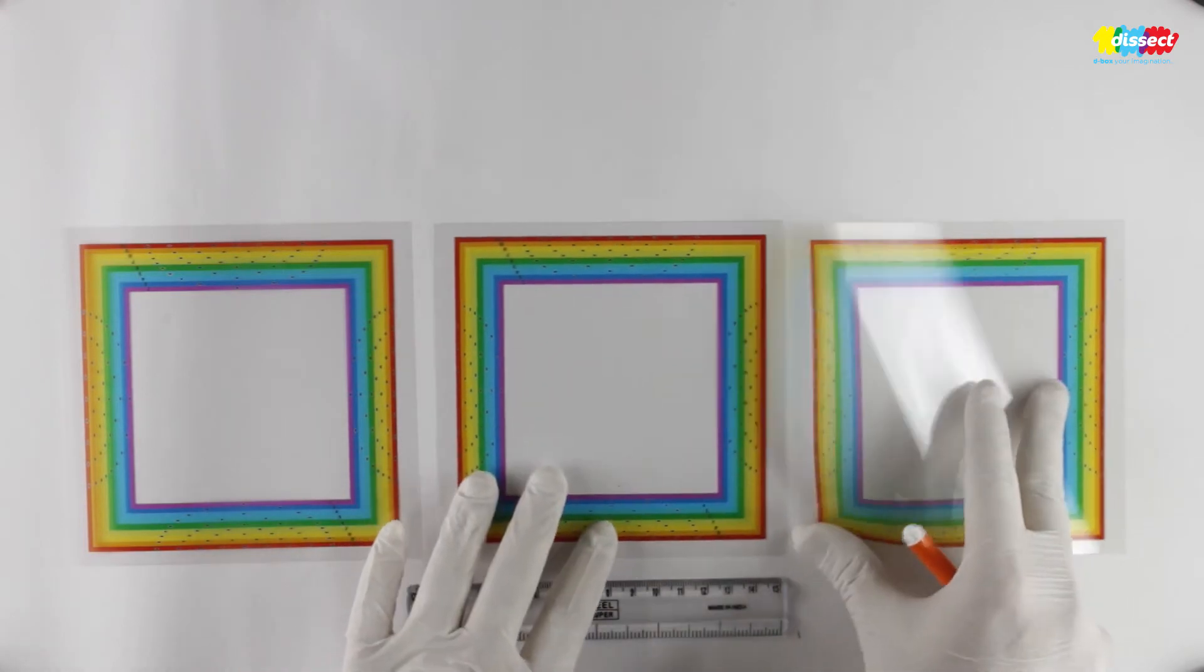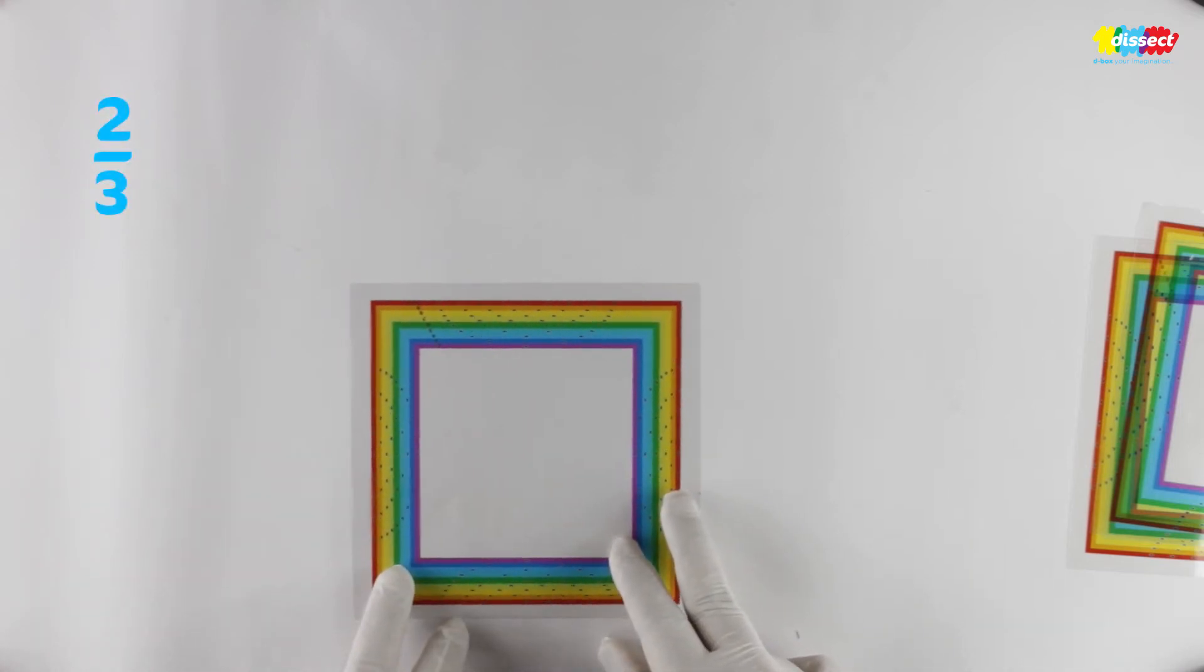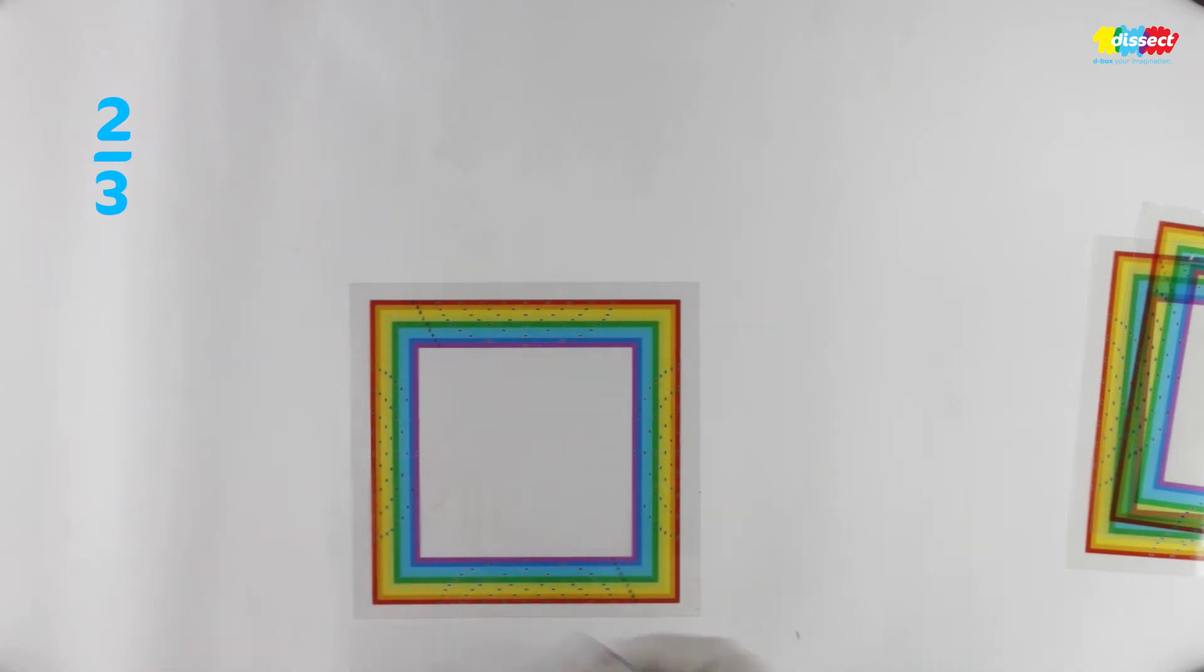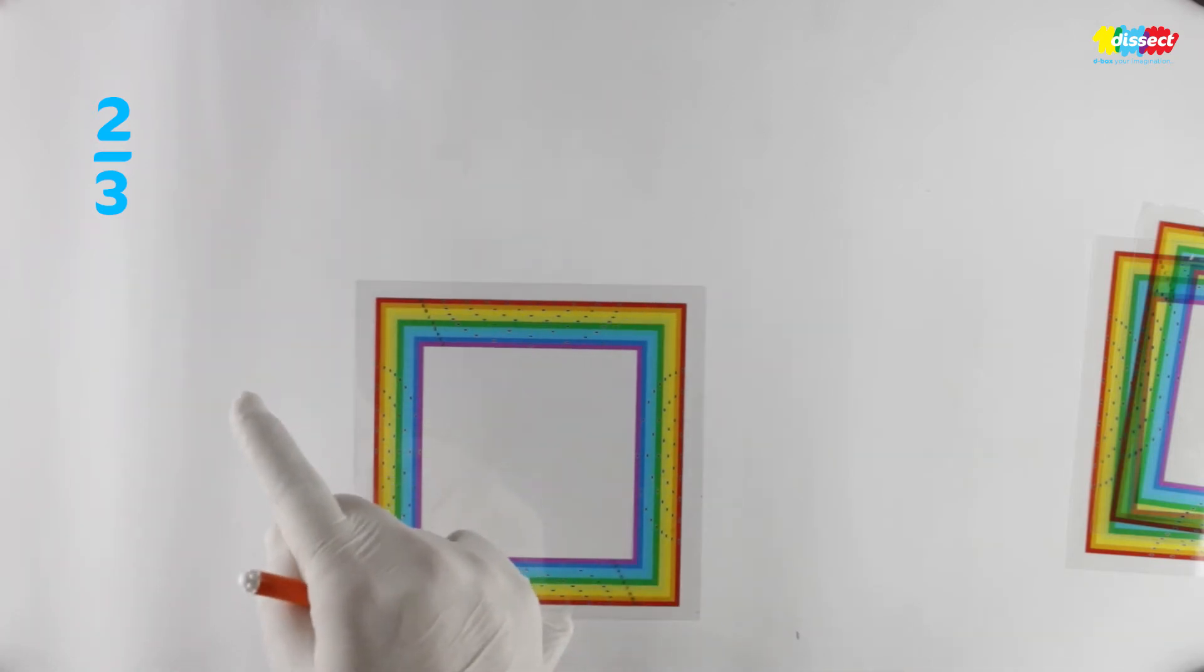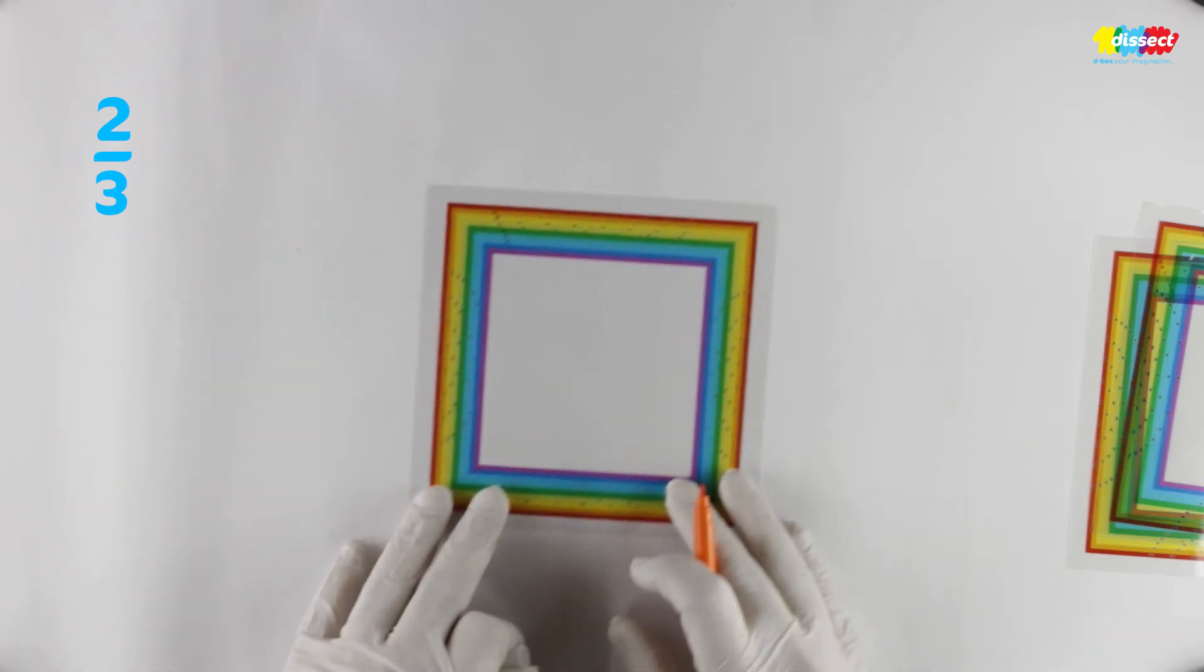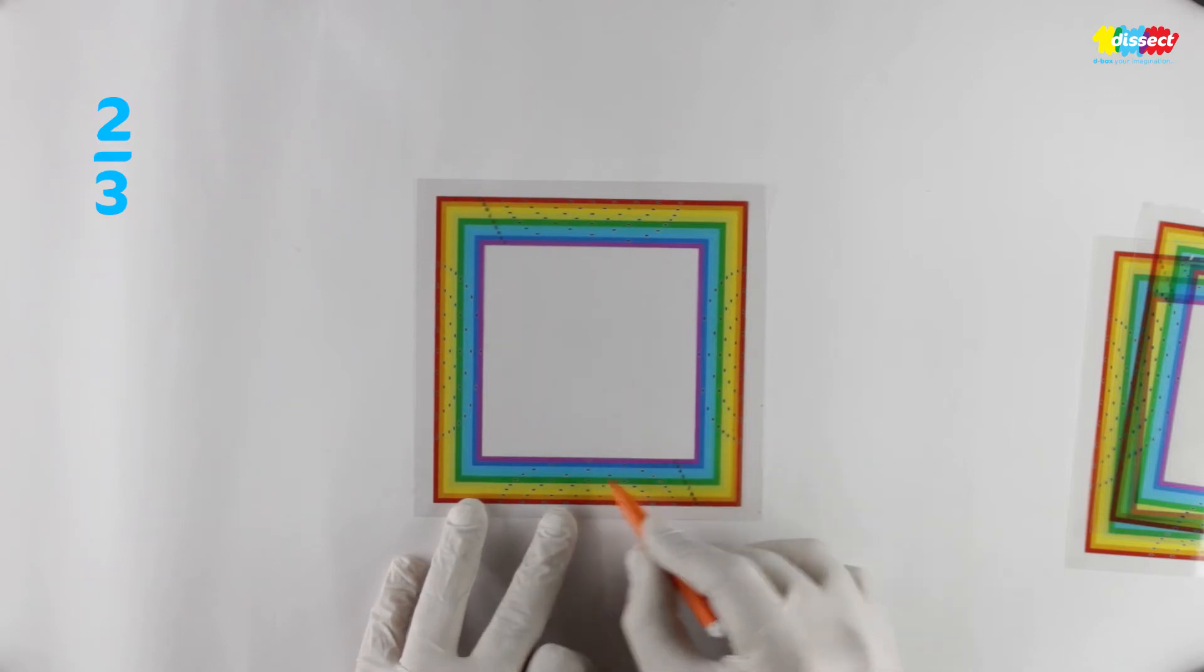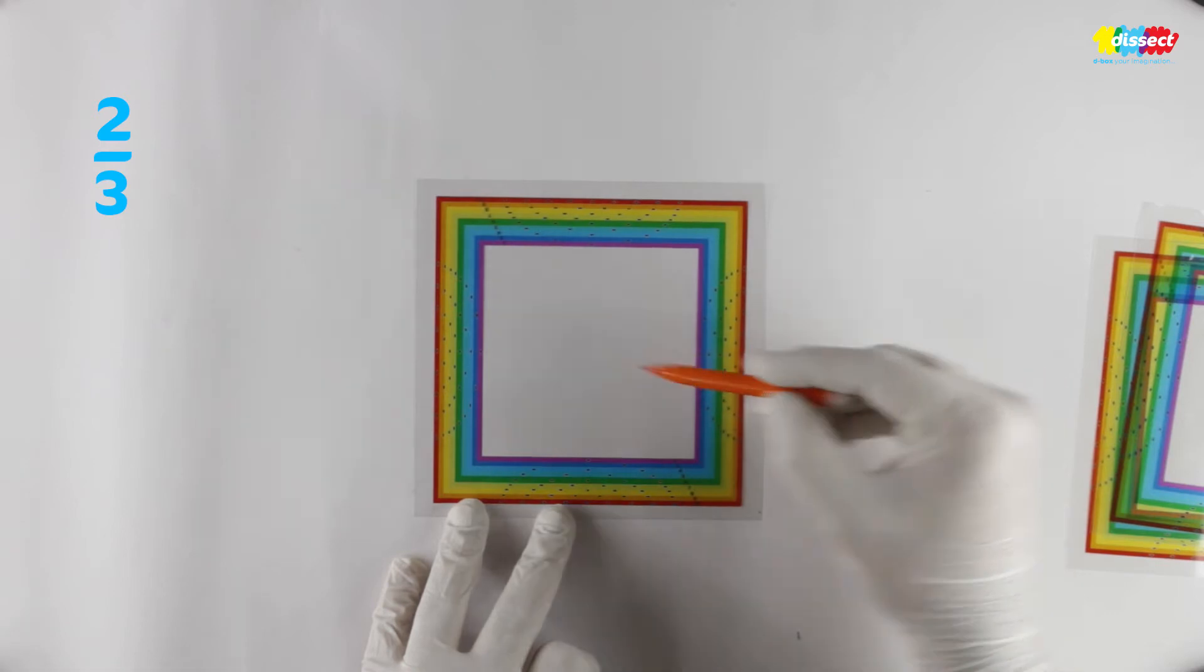So let's first take the first part 2 upon 3. What this means is it is a very simple kind of fraction that you need to prepare on this transparency sheet. 2 upon 3 means there are 3 equal parts. So what I have to do is I have to select the band which is 3. Now here it is a dark blue band. It has two dots here and two dots on the opposite side.